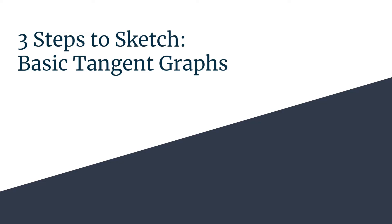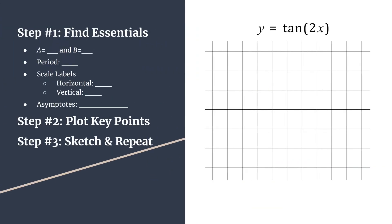Here are three steps to sketch the basic tangent graph y equals tangent of 2x. Here's a summary: Step one, find the essentials. Step two, plot your key points — remember the pattern is point, point, asymptote, point. And step three, sketch and repeat. If you need a refresher, check out the method video. All right, let's go ahead and start.